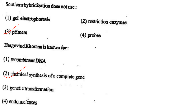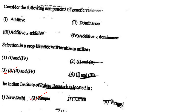Next one: Hargobind Khorana is known for option 1, recombinant DNA; option 2, chemical synthesis of a complete gene; option 3, genetic transformation; option 4, endonucleases. Answer is option 2: chemical synthesis of a complete gene.